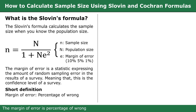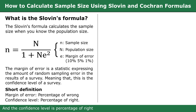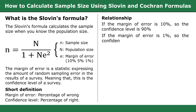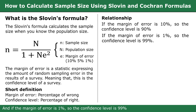Short definition: the margin of error is the percentage odds wrong, and the confidence level is the percentage odds right. Relationship between margin of error and confidence level: if the margin of error is 10%, then the confidence level is 90%. And if the margin of error is 1%, then the confidence level is 99%.